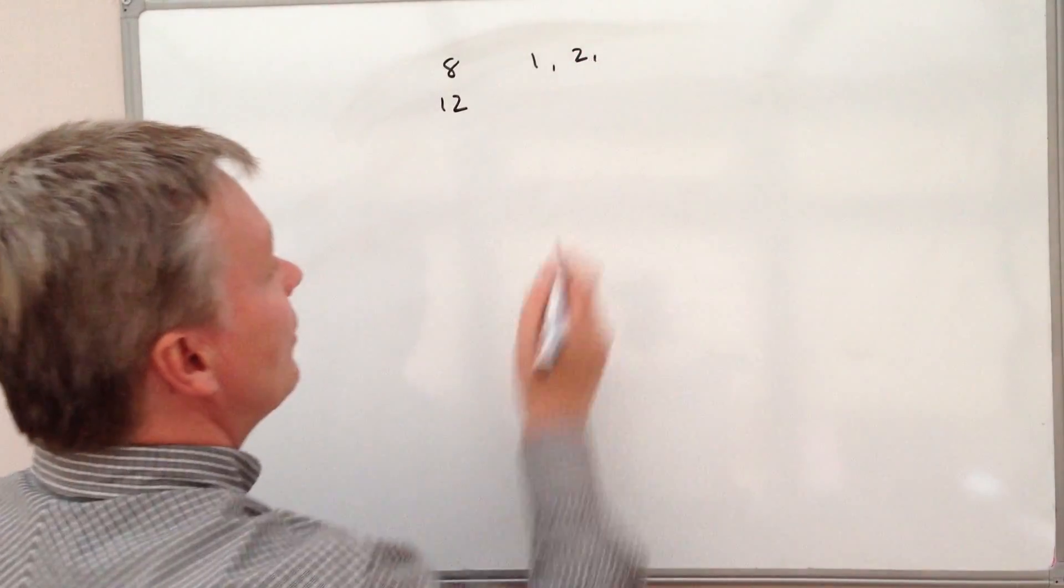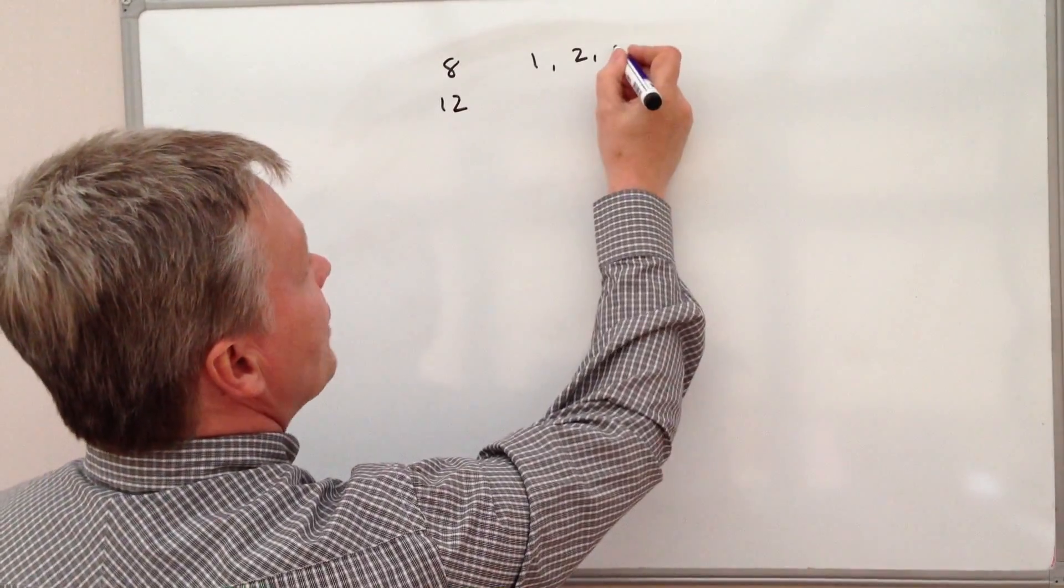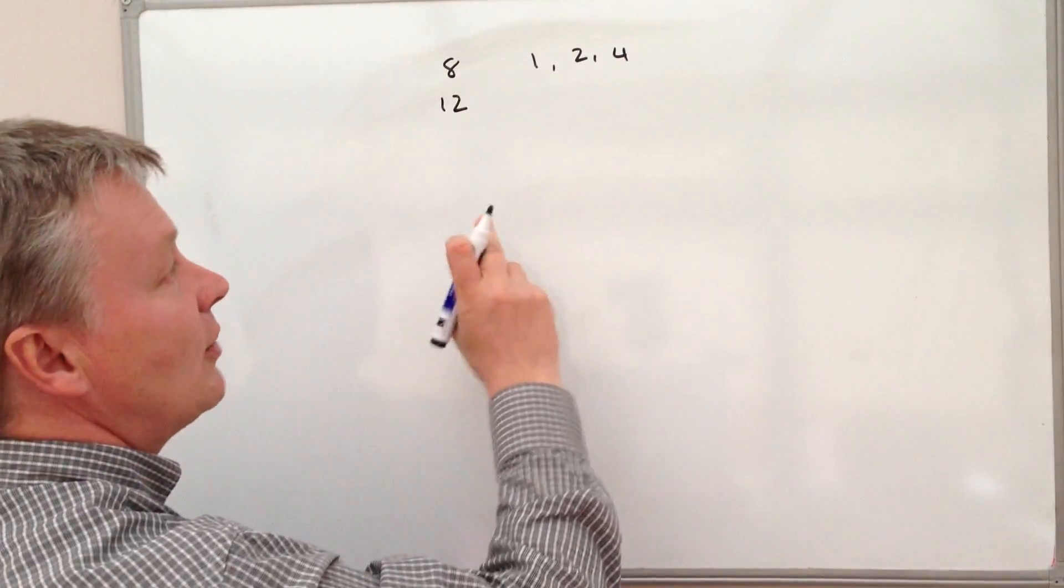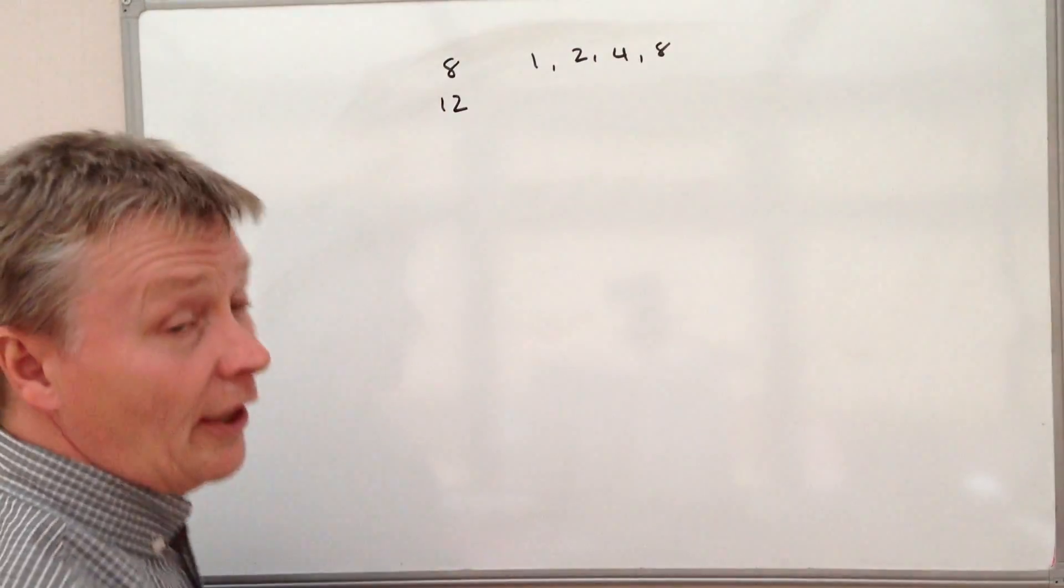The next factor will be 4, because it will go into 8 twice. And then the last factor will be 8, because it will go into 8 once.